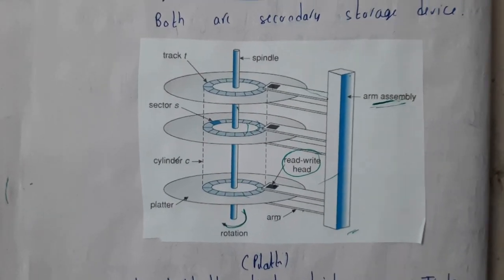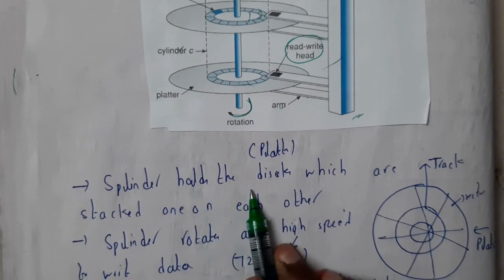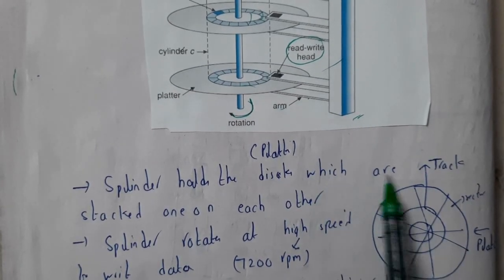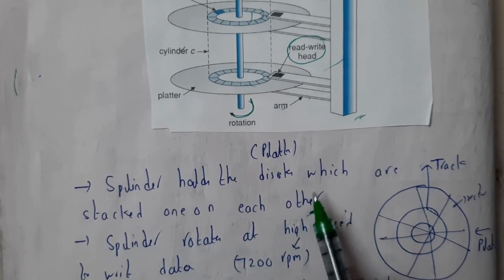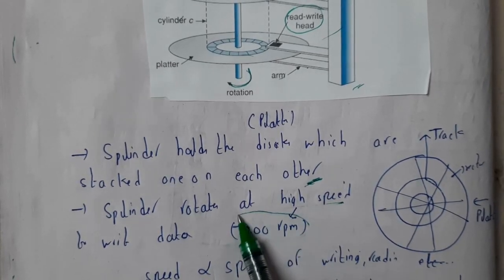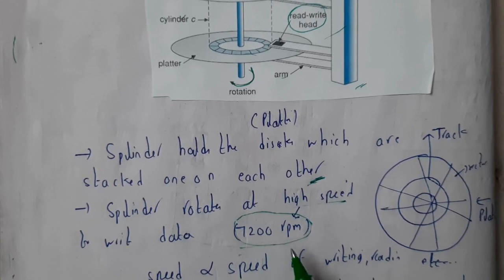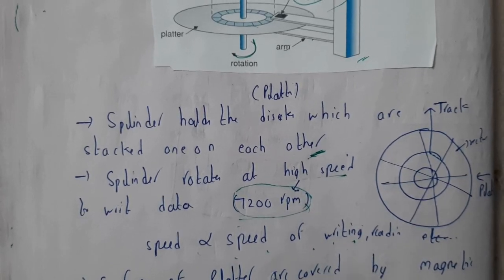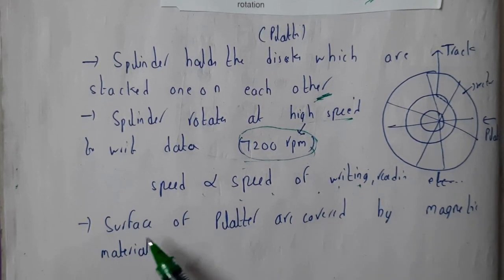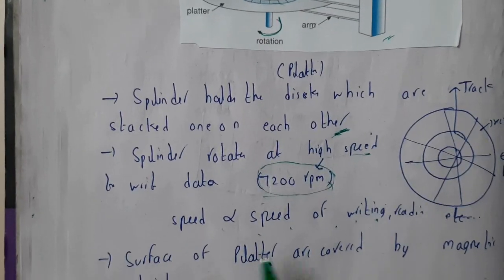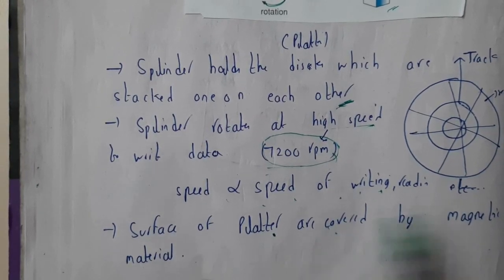The spindle holds the disks, which are plates stacked one on top of each other. The spindle rotates at high speed to write data. One of the most commonly used hard disk speeds is 7200 RPM — rotations per minute. Speed is directly proportional to the writing speed, so the faster the disk rotates, the faster data can be read or written. The surfaces of the platters are covered with magnetic material.